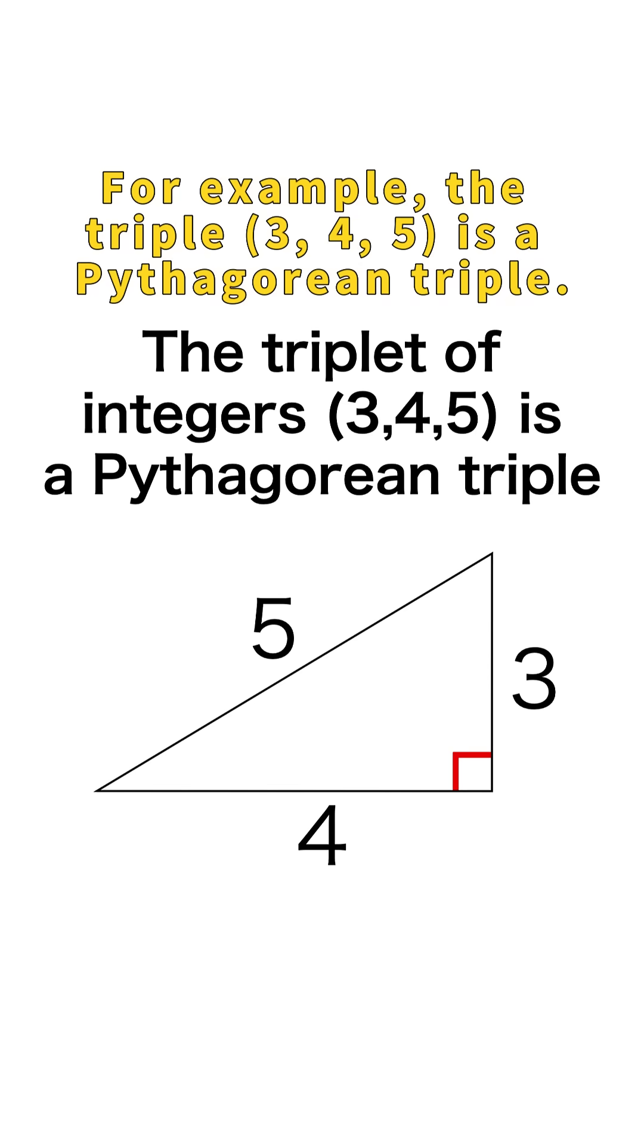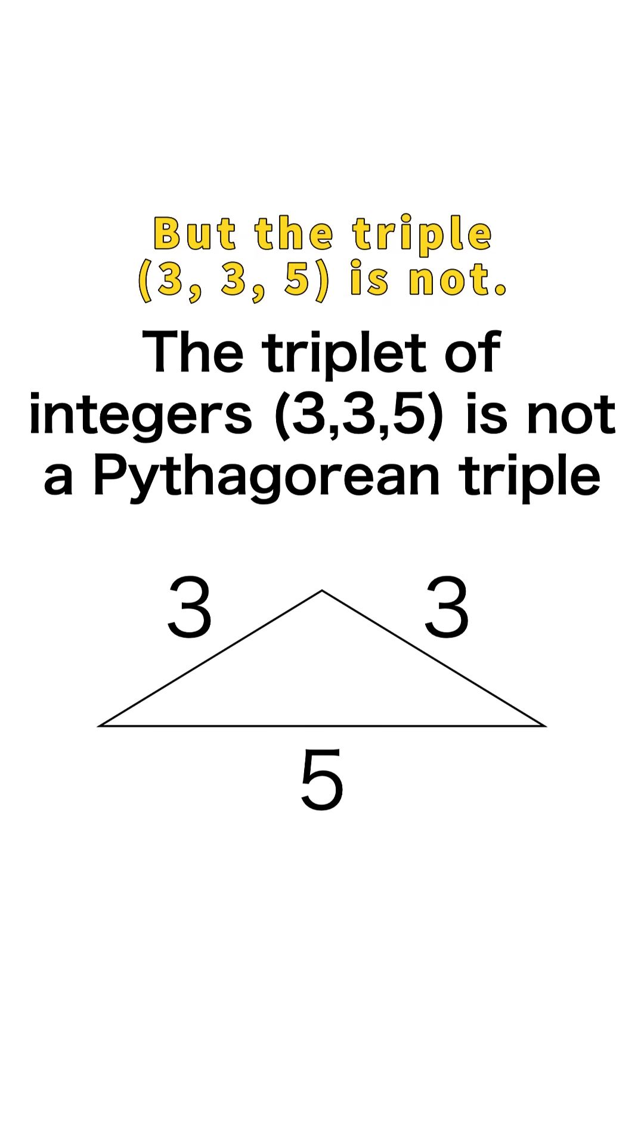For example, the triple 3, 4, 5 is a Pythagorean triple. But the triple 3, 3, 5 is not.